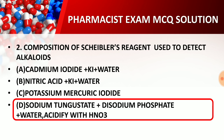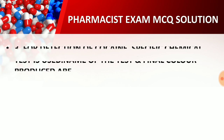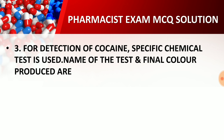Schiller's reagent composition is sodium tungstate, disodium phosphate, water, and acid with HNO3. So question two answer is D. Moving to question number three: for detection of cocaine, a protein-specific chemical test is used — name the test and the final color produced.